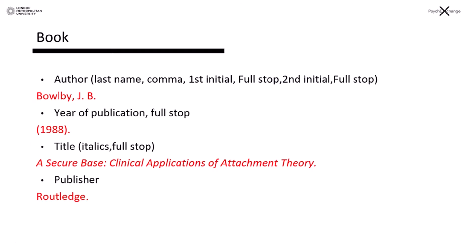We've moved from in-text citations. We're now moving into how you actually reference two common resources: books and journal articles. So I'm going to break it down and bring it all together. We have here an example starting with the author — the surname. So last name, comma, first initial, full stop, second initial, full stop — that's if they have a second initial. So we have Bowlby, J.B., followed by the year of publication in brackets, full stop. Then we have the title, all in italics and full stop. And finally we have the publisher, which is Routledge. So it follows that format: author, year of publication, title, publisher.